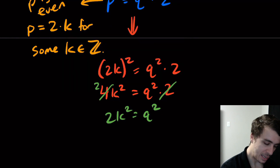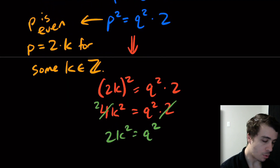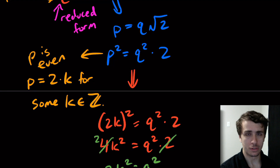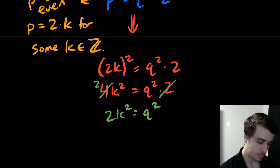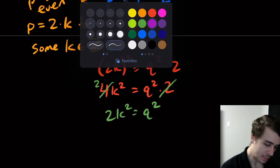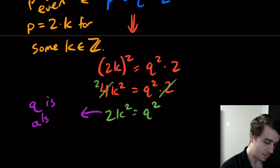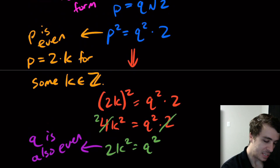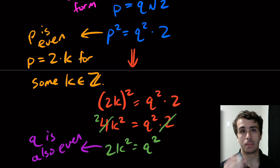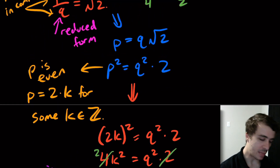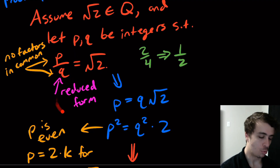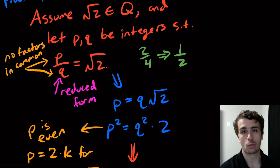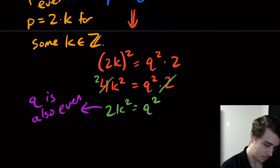Now here's where the contradiction happens. We note that p squared being even implies p is even — because if you square an odd number you get an odd number. And from 2k squared equals q squared, we see that q squared is even, which implies q is also even. But that means p and q can both be divided by two, which contradicts the fact that they have no factors in common — they weren't in reduced form even though we assumed they were. Contradiction.